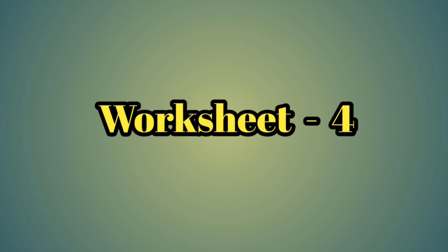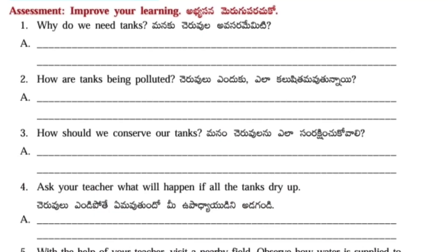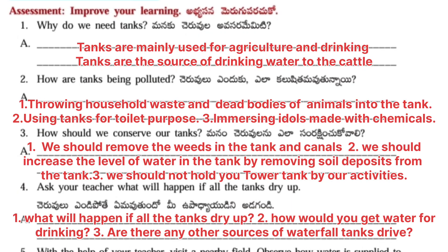Next Worksheet No. 4, Assessment: Improve your Learning. First question: Why do we need tanks? Answer: Tanks are mainly used for agriculture and drinking. Tanks are the source of drinking water to the cattle. Second question: How are tanks being polluted? Throwing household waste and dead bodies of animals into the tank. Using tanks for toilet purpose. Immersing idols made with chemicals.